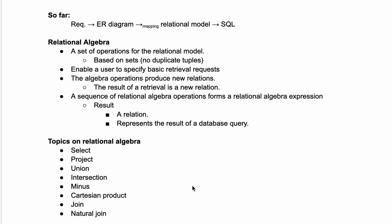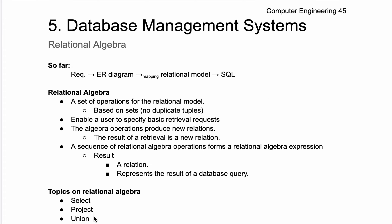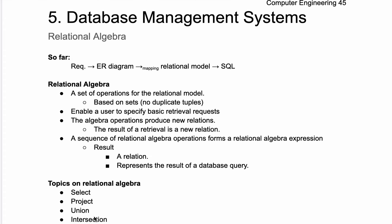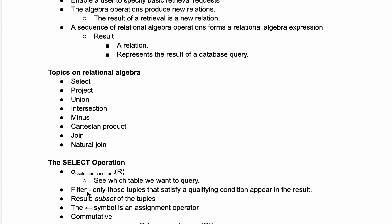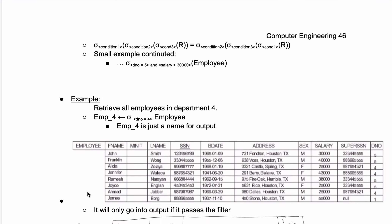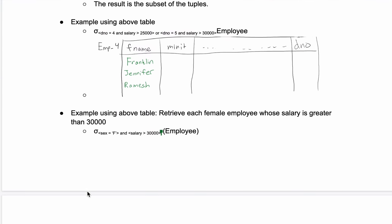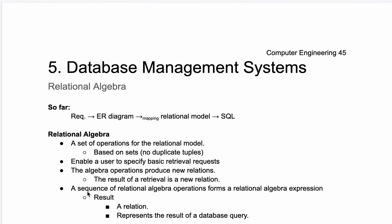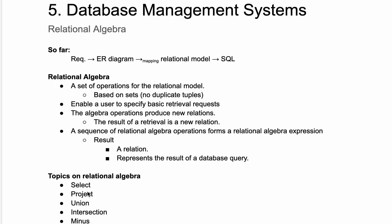The topics we're going to be going over for relational algebra are: select, project, union, intersection, minus, Cartesian product, join, and natural join. This is just an introduction to relational algebra in database management systems. Next, we're going to look at the select operation and do some examples — that'll be in the playlist link below the like button, in the very next video.